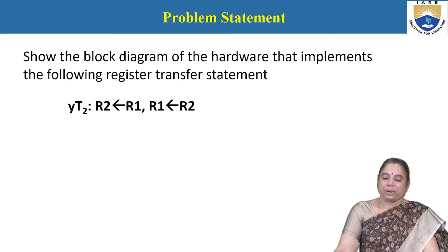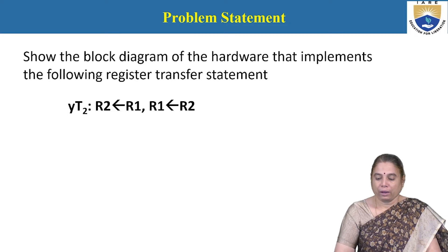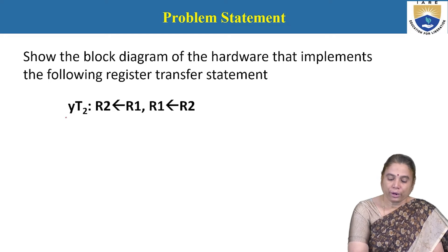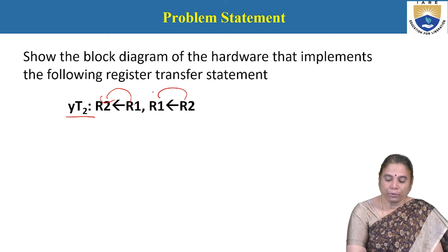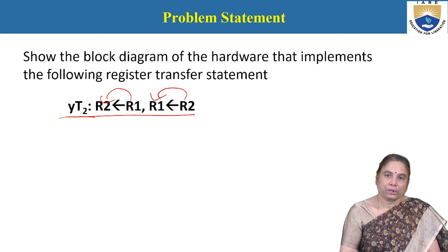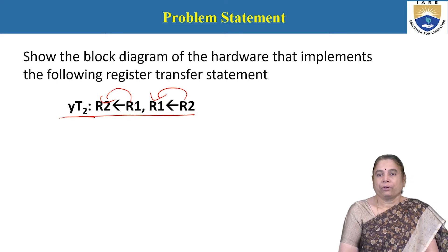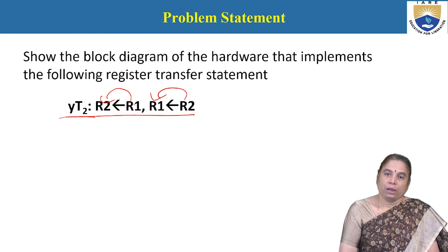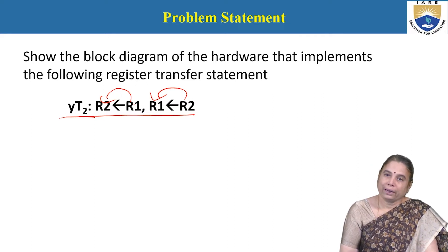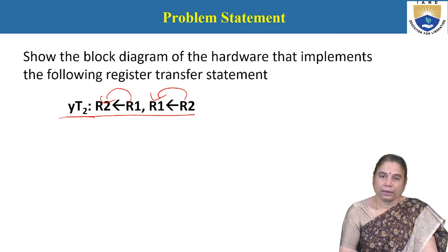The first problem statement is: show the block diagram of the hardware that implements the following register transfer statement — Y·T2 colon: R1 transfers to R2, R2 transfers to R1. Here, Y·T2 represents the control function. In RTL, the control function is a Boolean variable. When Y and T2 both have the value 1, the transfer between the registers can take place.